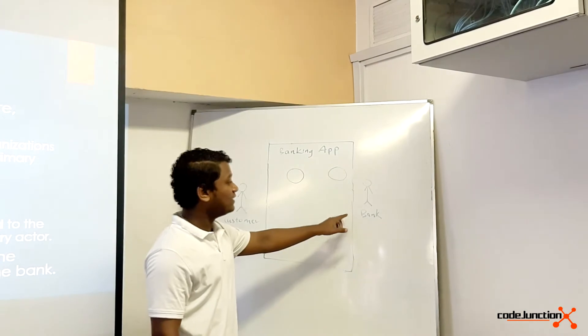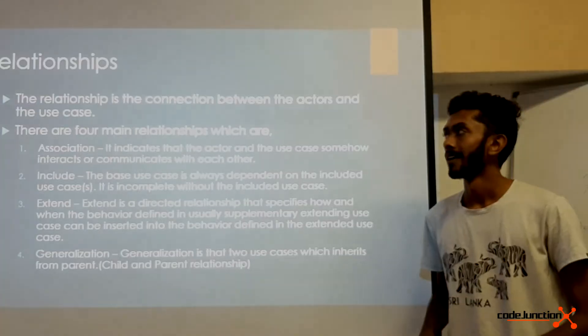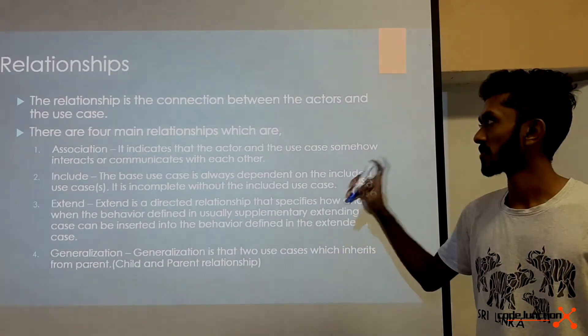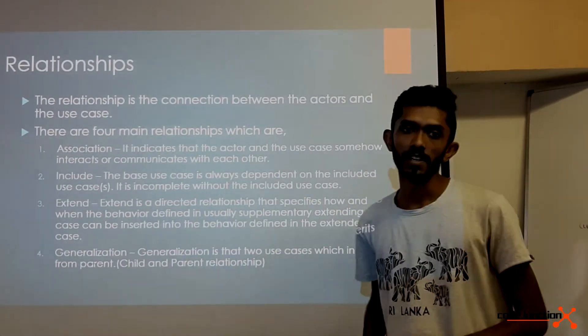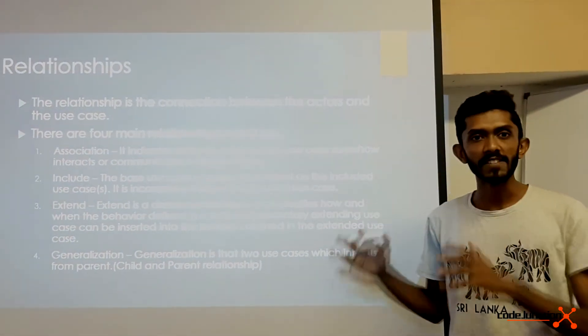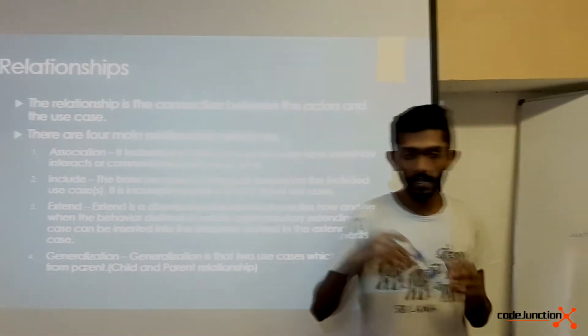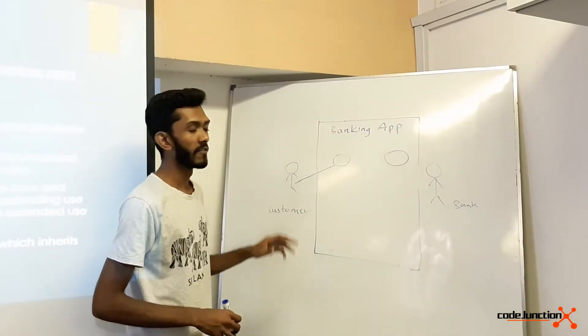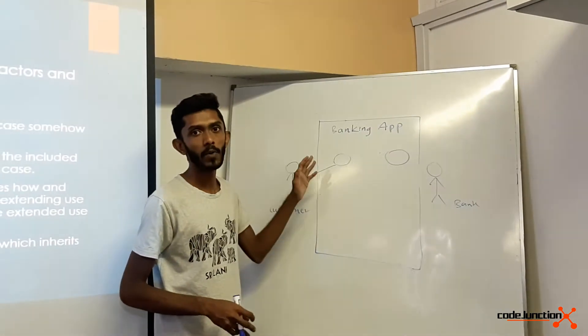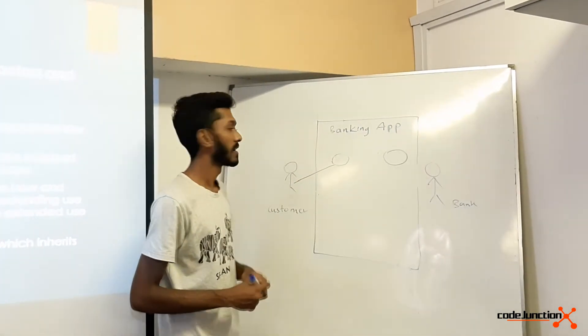In relationships, there are four main relationships we can see. First one is association. Association is a very simple, basic relationship between an actor and the bank. In our example, it's the bank.